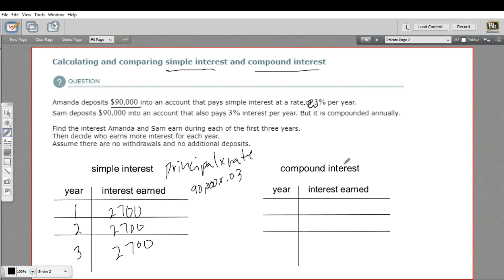Compound interest works a little bit differently. So compound interest is not the principal, it's the amount in the account times the rate. And the amount in the account is going to change every year because the interest gets added to it. Let me show you how that works. In year one, you take the amount in the account, which is $90,000 to start, and you multiply it by .03. So we have 90,000 times .03, and that's 2,700. So for that first year, they earned the same amount of interest, both Amanda and Sam.